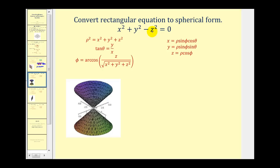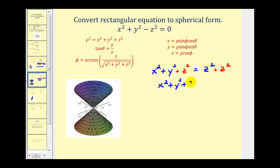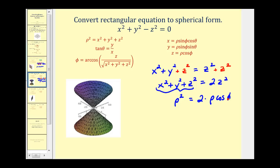So what we'll do here is move the z squared term to the right side. And now if we add z squared to both sides, we would have x squared plus y squared plus z squared equals two z squared. That's helpful because now we can replace the left side with rho squared, and now we only have to deal with this z squared. There is an equation that says z equals rho cosine phi, so we would have two times rho cosine phi, and this would be squared.